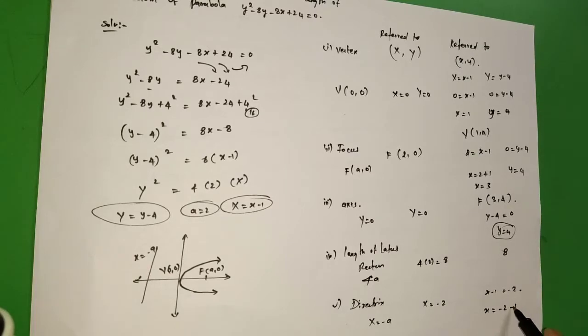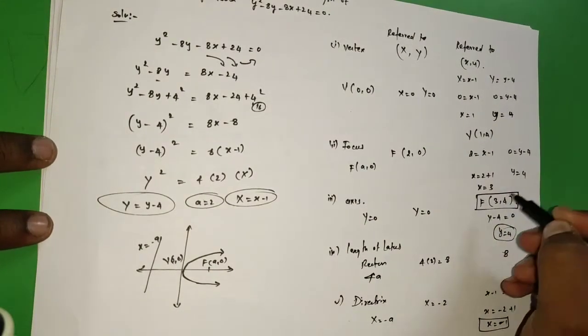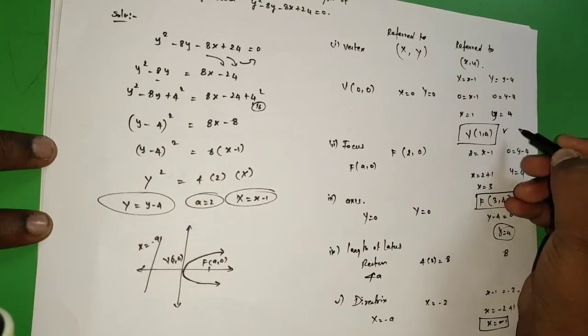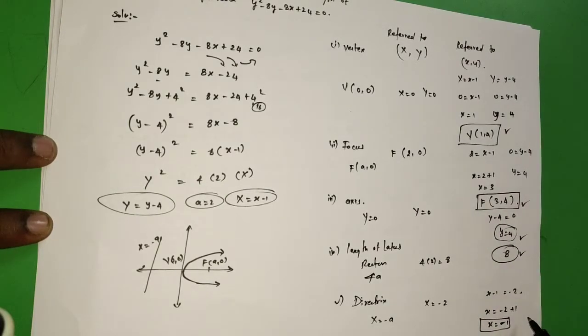So now we are getting five results. What are they? x = -1, then vertex V(1, 4), focus (3, 4), axis y = 4, latus rectum 8, and directrix x = -1. That's it. Thank you.